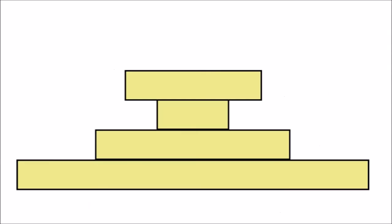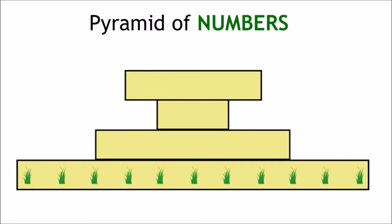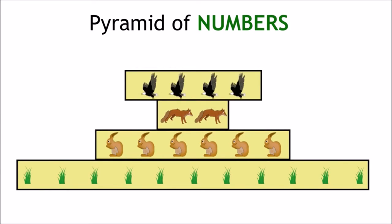So let's look at the following pyramid of numbers, which doesn't take into account the size of organisms. In this ecosystem, we have grass, which is eaten by rabbits, who are then eaten by foxes, who are finally eaten by eagles.